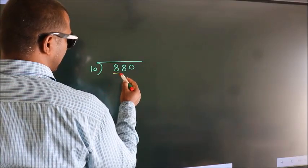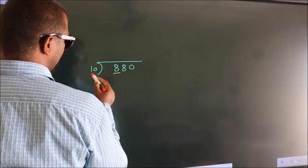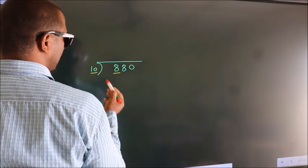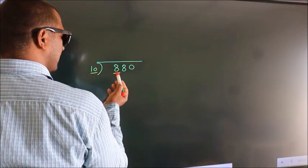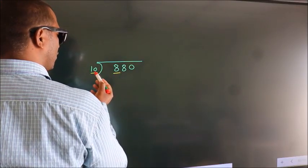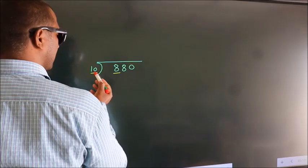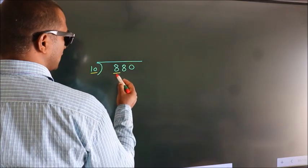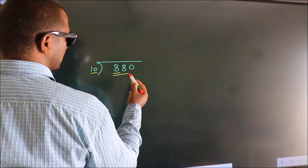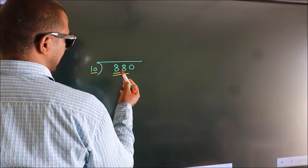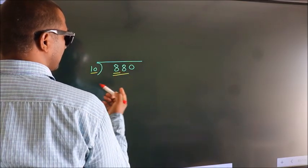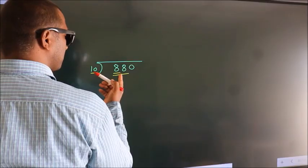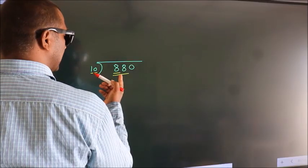Here we have 8, here 10. 8 is smaller than 10. So we should take two numbers: 88. A number close to 88.